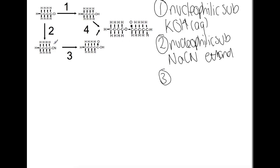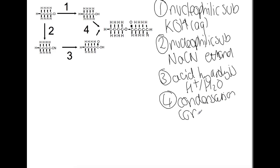Number three is from CN to a carboxylic acid so this is an acid hydrolysis using acid and water. And then finally step four. You're bringing the two together to give you an ester so this is a condensation reaction. And you would need concentrated sulfuric acid for that step.